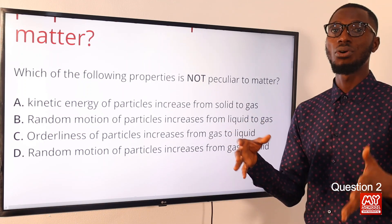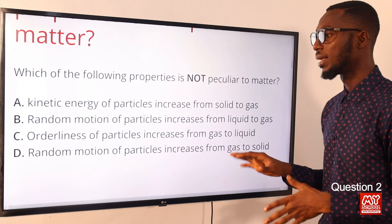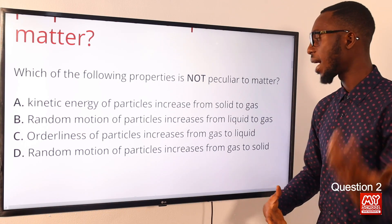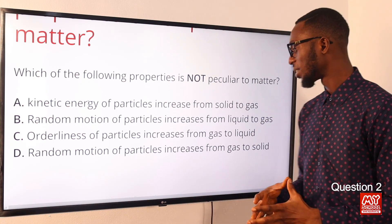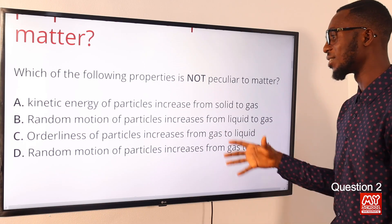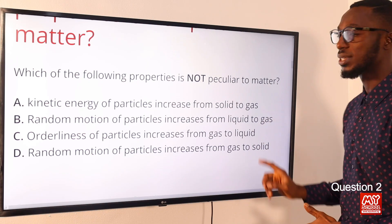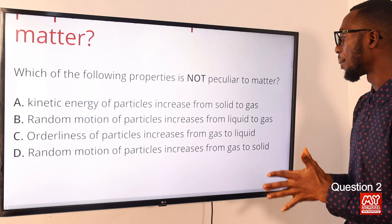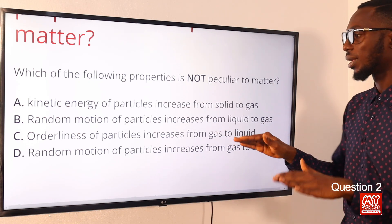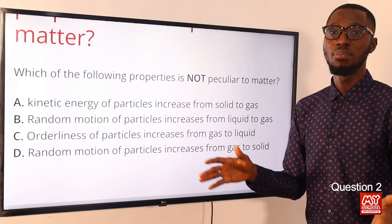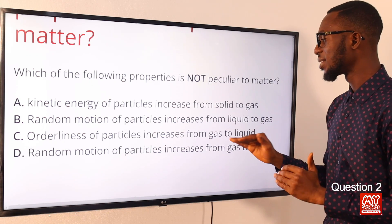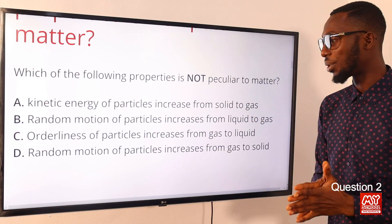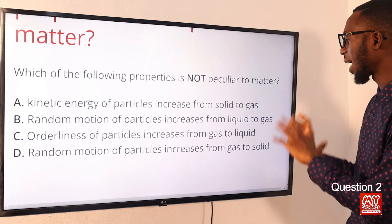Random motion increases from liquid to gas — the particles of solid just vibrate in their particular position, they don't have the liberty to move around. There is freedom of movement in gases. Option C: orderliness of particles increases from gas to liquid. When you talk about orderliness — proper arrangement — this orderliness increases from the gaseous state up to the liquid, then is well-refined in the solid. This is correct.